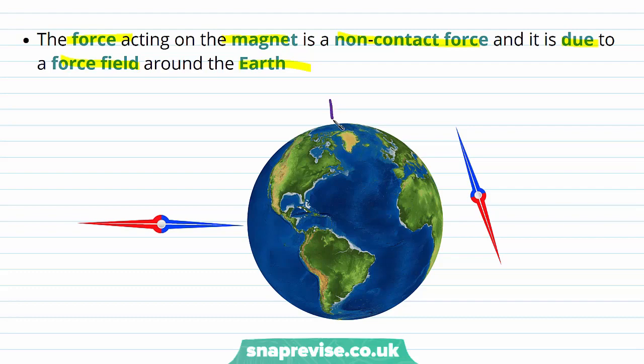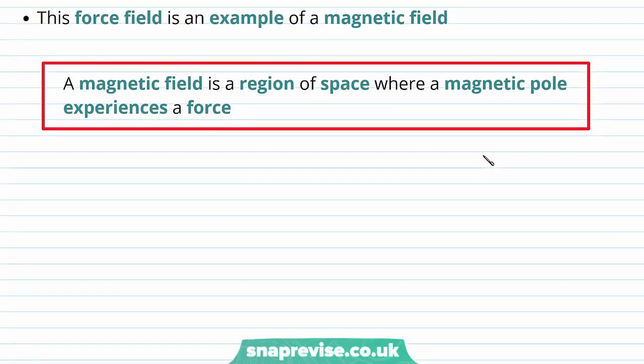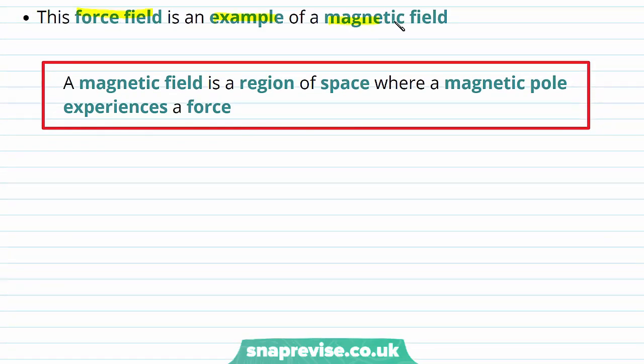The earth spins around an axis, and the force on the magnet is going to act to align the magnet with the axis, as we can see here. This force field is an example of a magnetic field. And the definition of a magnetic field is that it is a region of space where a magnetic pole experiences a force.